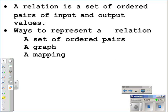A relation is a set of ordered pairs of input and output values. There are three different ways to represent a relation. One way is a set of ordered pairs, the second way is a graph, and the third way is a mapping or a mapping diagram.